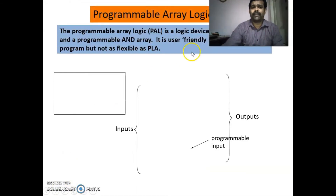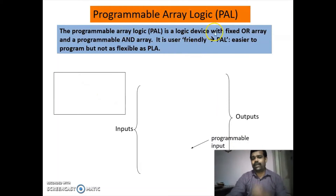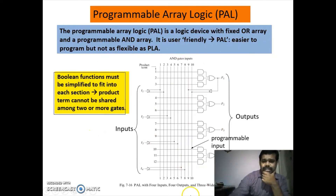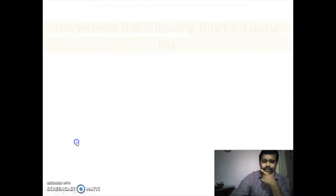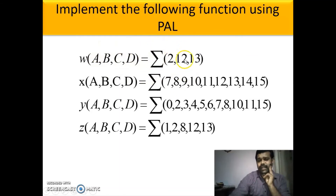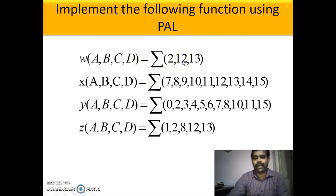PAL is a programmable array logic having a fixed OR array and programmable AND array. It has four inputs, one feedback input, and outputs. Each section has three AND gates and one OR gate. Now we are going for a problem: we have four functions W, X, Y, Z, each having four variables, and we have to implement using PAL. This is an example of SOP.